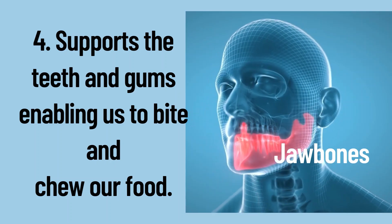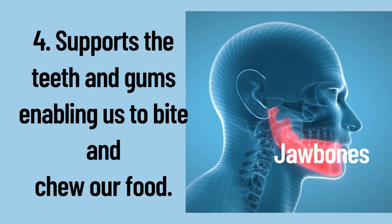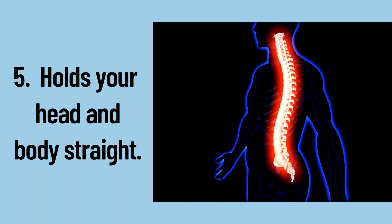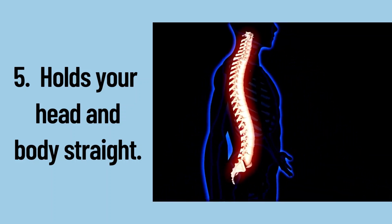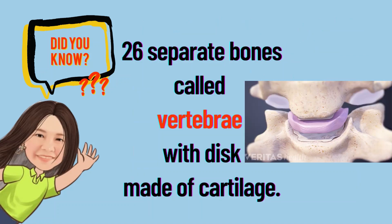Number 4: it supports the teeth and gums, enabling us to bite and chew our food — our jaw bones protect and support our teeth. Number 5: it holds our head and body straight, so we can stand and sit straight because of our bones. Did you know that there are 26 separate bones called the vertebrae, with discs made of cartilage?